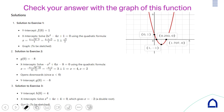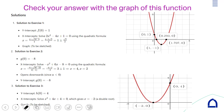In the graph, the coordinates for the x-intercept, the vertex, and the y-intercept are labeled. For the second exercise, the vertex and y-intercept are also shown.